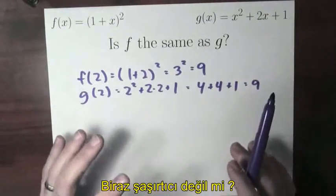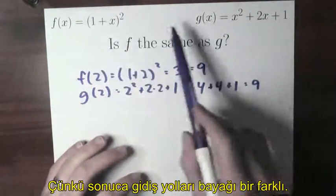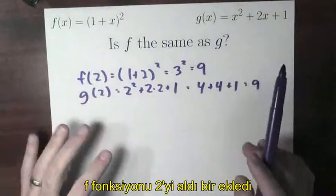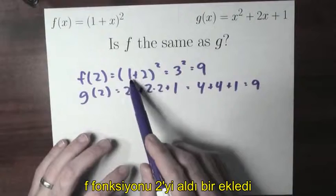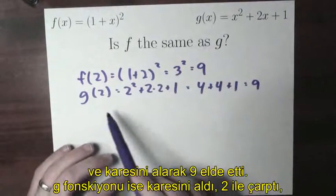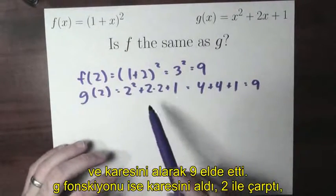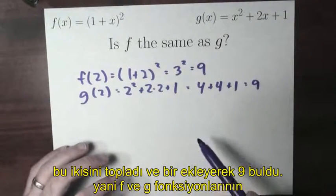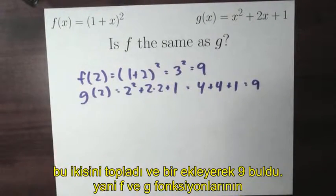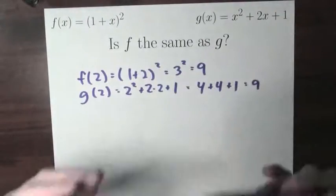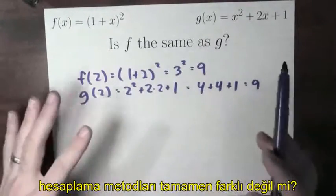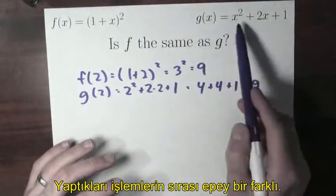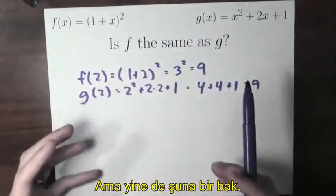And that should be a little bit surprising, because the way that f and g are telling me to compute their output is totally different. f takes the input 2, adds 1 to it, and squares it to get 9. g takes 2, squares it, doubles it, and adds those two numbers to 1 to get 9. The method by which f and g are doing the calculations is totally different — this sequence of operations is not the same as this sequence of operations. The rules are different.